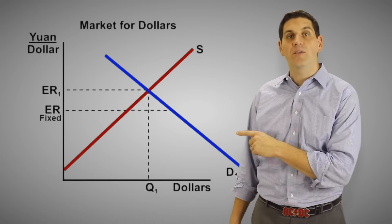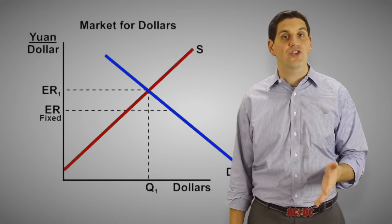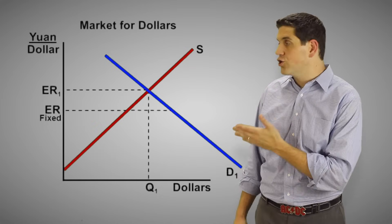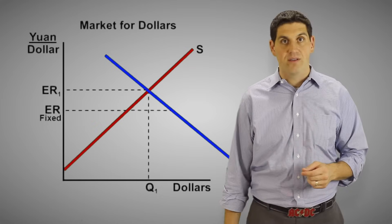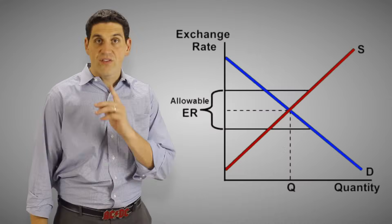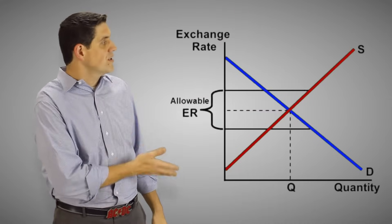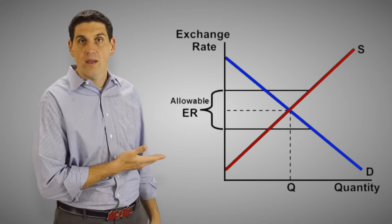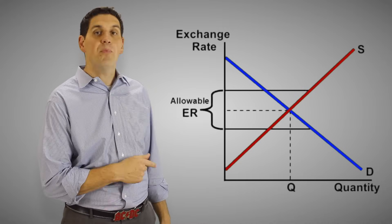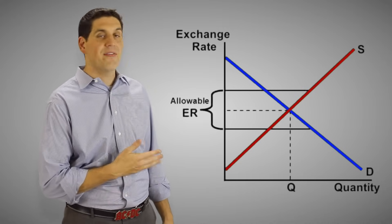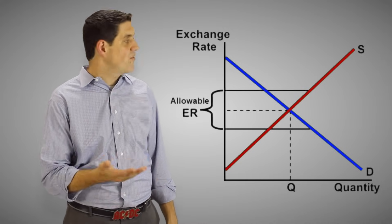The government might want to do this because they want to keep exchange rates artificially low to increase exports. In real life, the United States, Canada, and the UK all have floating exchange rates. Hong Kong, Argentina, and Bulgaria all have fixed exchange rates. And other countries have established some sort of range that the currency has to stay in between. So if their currency starts to appreciate or depreciate outside that range, the government gets involved.